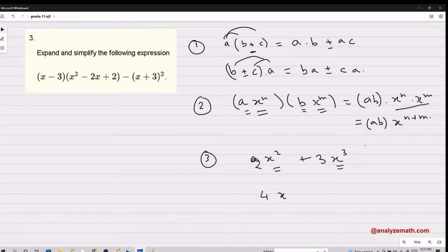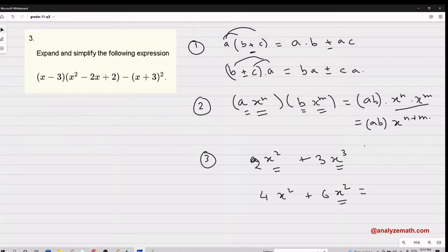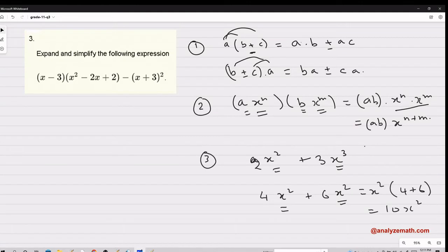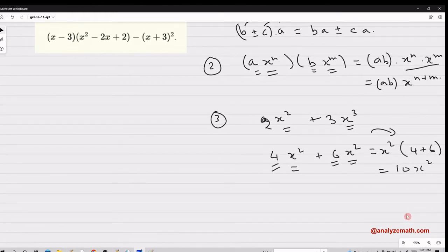However, if I have 4x² plus 6x², I can simplify this. Why? Because x² is the same x² here, the same power, and then I can factor it and say four plus six, and this gives me 10x². These are the three main ideas we're going to use when we expand.